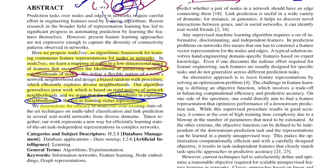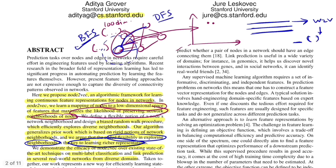They demonstrate the efficacy of Node2Vec over existing state-of-the-art on multi-label classification and link prediction on several real-world networks. For multi-label classification, consider a social media network where every node is a user and edges signify friendships — you could classify nodes by interest or community membership. For link prediction, consider Facebook's friend recommendation system, which predicts whether an edge can exist between two nodes based on common interests and friends.